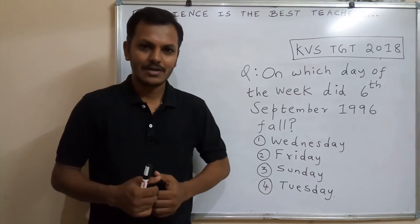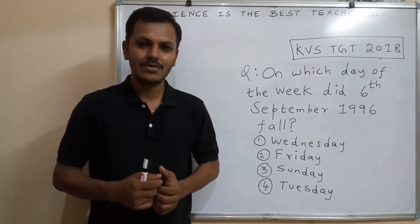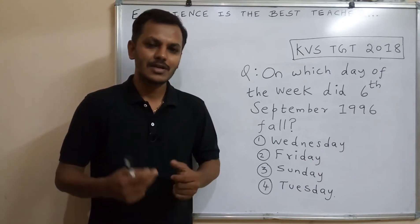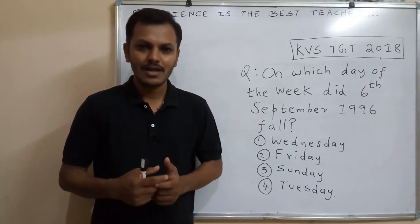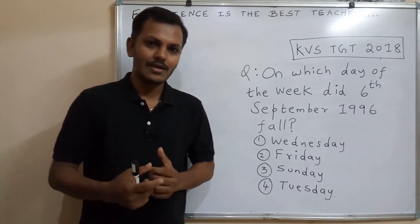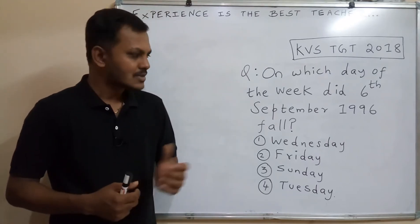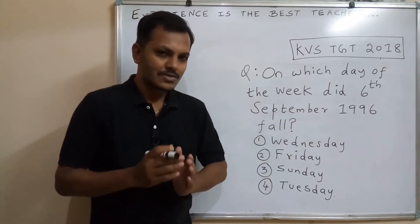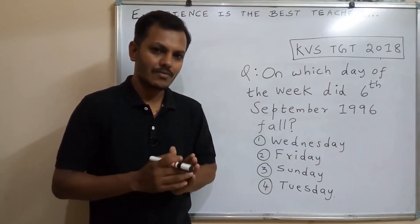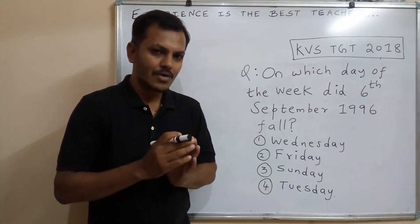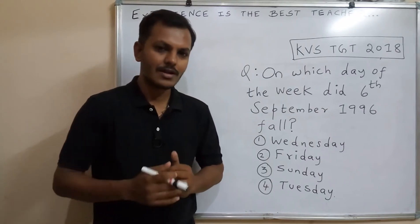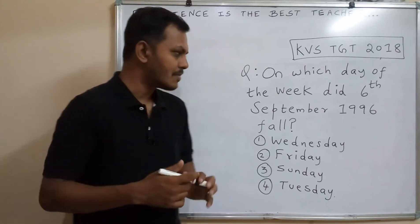Please watch our calendar reasoning tricks video — the link is given in the description — so you can easily find out the rules for how to find the day when a date is given. For this type of problem, you have to write five different numbers. We will see them one by one.